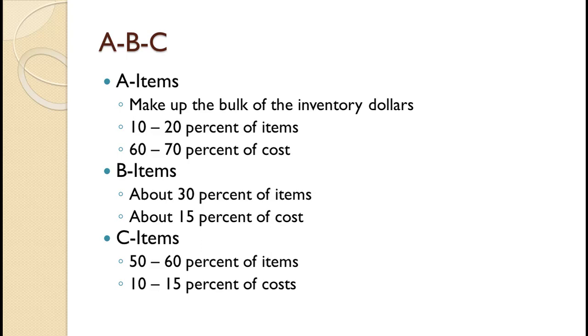These percentages are more rule of thumb than hard and fast requirement. Generally, A items make up 60-70% of the cost of inventory and 10-20% of the count of the inventory items.